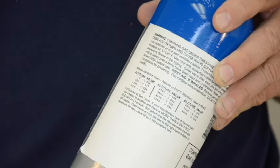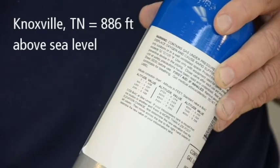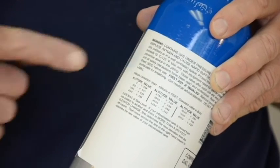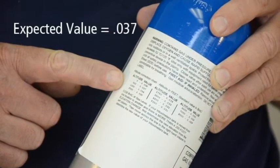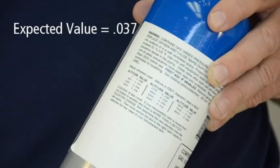if you are performing a calibration in Knoxville, Tennessee, which has an altitude of 886 feet above sea level, the altitude chart shows the expected value of the alcohol gas tank to be 0.037.